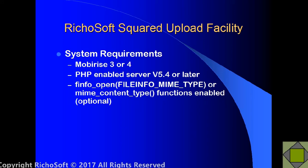If possible, the finfo extension for the file MIME type or the MIME content type functions should be enabled on the server, although that is optional. If they are enabled, the system will check the file extension against the MIME type of the file to make sure the user is uploading the correct type of file. So if they try to upload a file with a JPEG extension but it is actually an EXE file, it will reject it — the MIME type must match the file extension. That prevents them from uploading a virus to your system disguised as a JPEG.